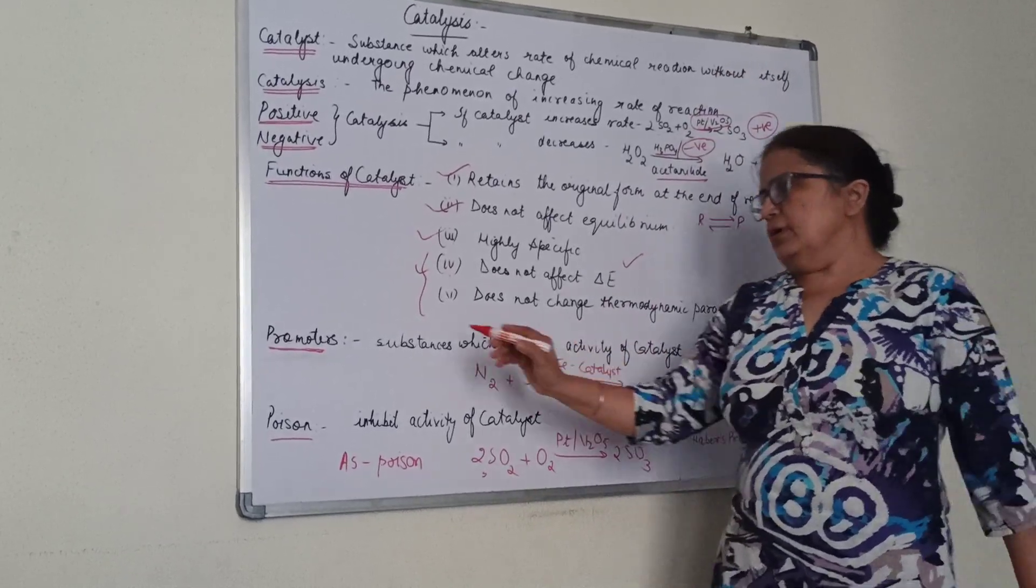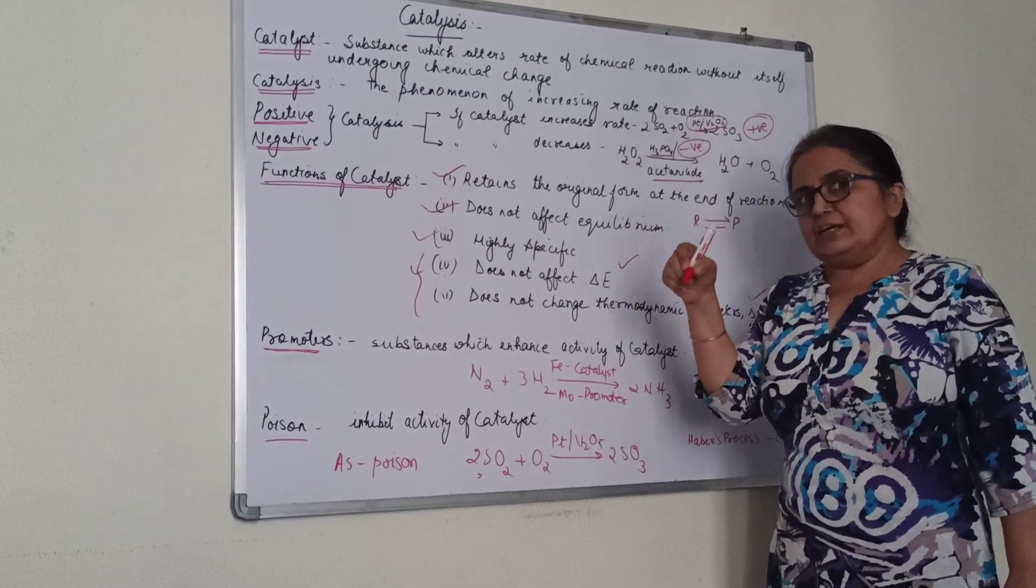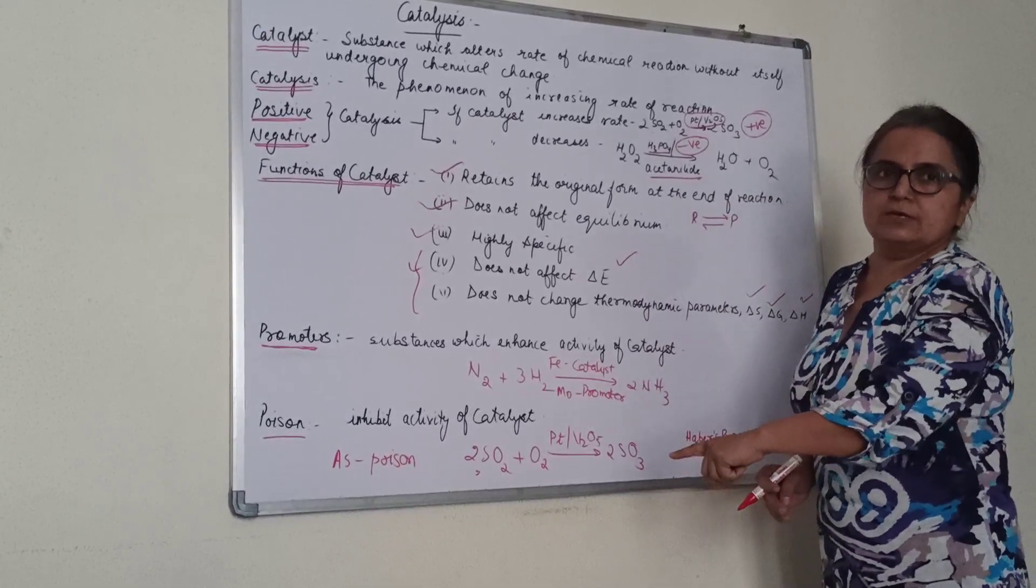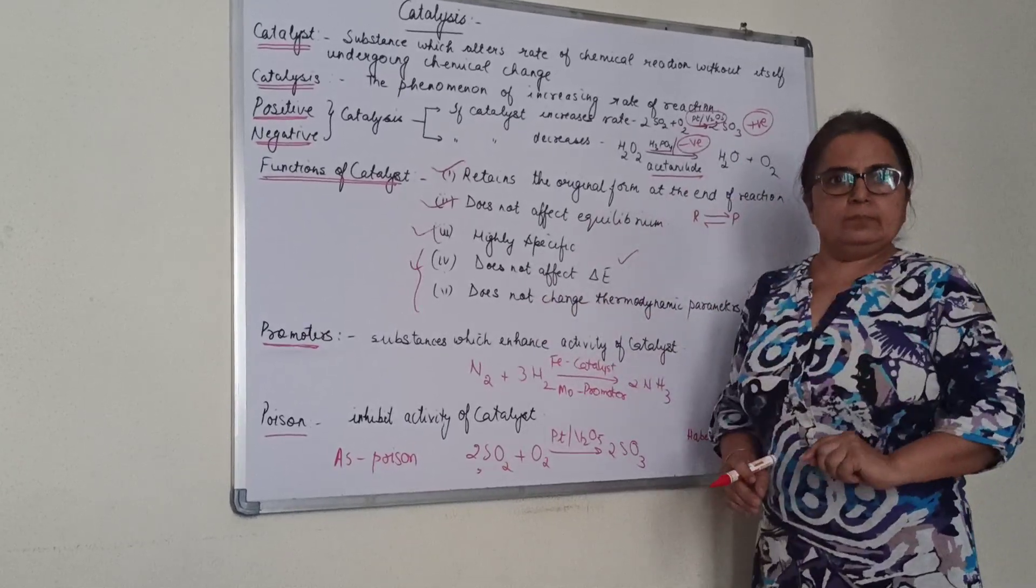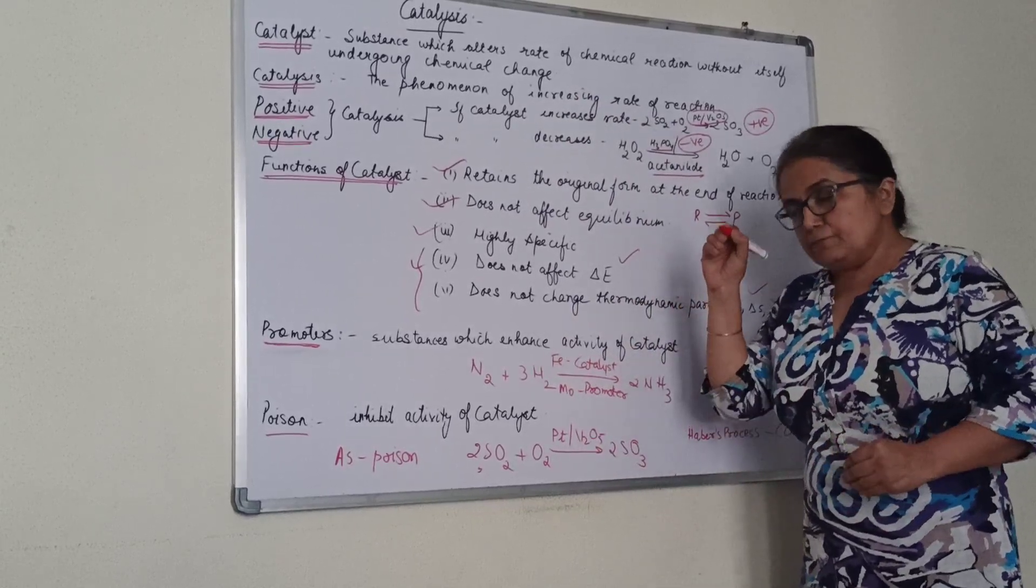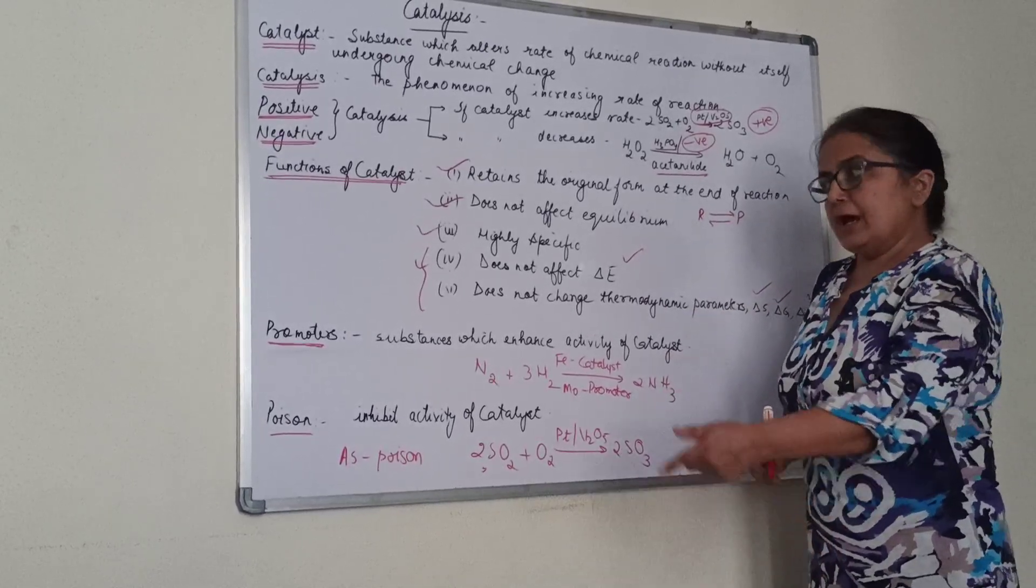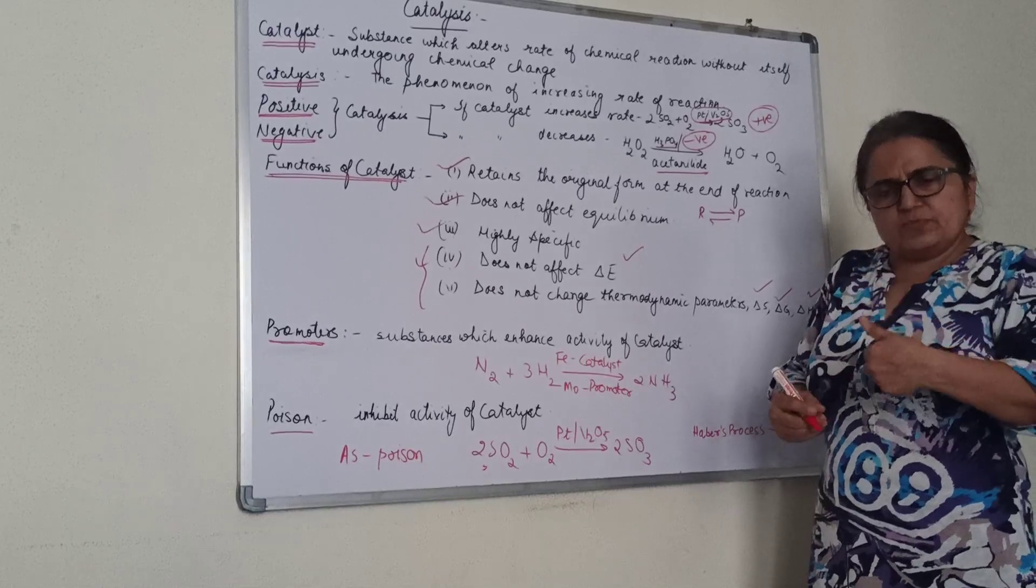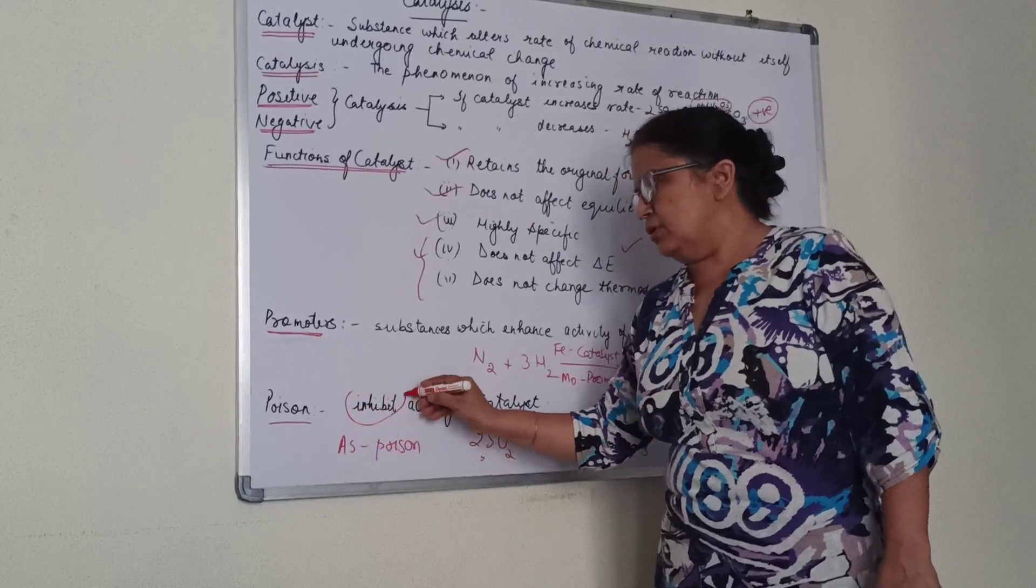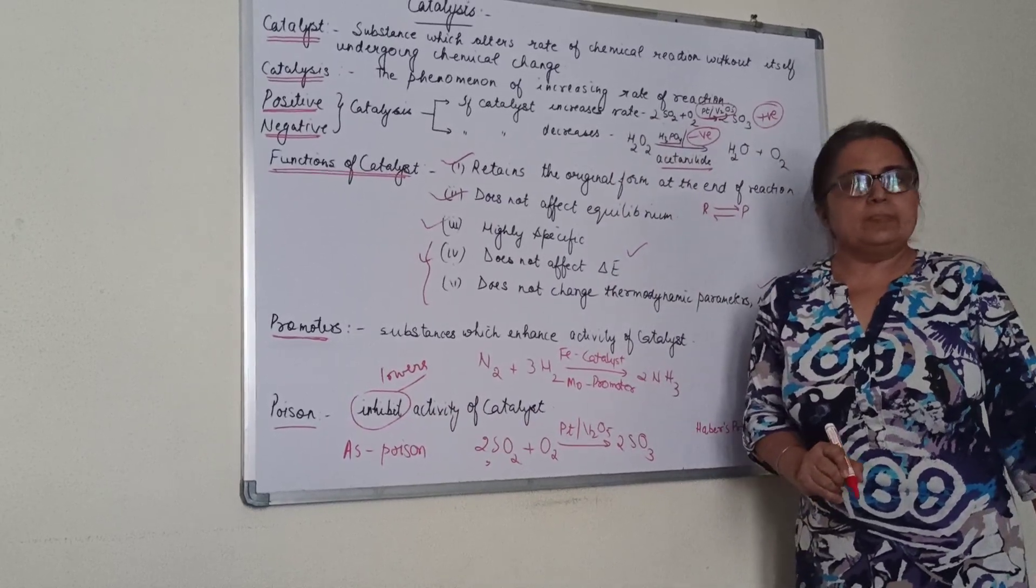Now the last two terms: promoters and poisons. Just like positive and negative catalysts, any substance which increases the activity of the catalyst is called a promoter. Indirectly, it might affect the reaction, but primarily a promoter increases the efficiency of the catalyst. A poison decreases or inhibits—it lowers the efficiency of the catalyst.